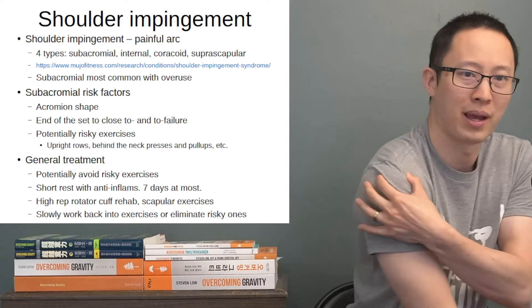There are four different types. The first and most common is subacromial impingement, and the acromion of the shoulder is right here. If you go to the end of your shoulder and feel the bony structure before you get into the soft tissue of the deltoid, that's the acromion. Usually the pain is right underneath this area of the shoulder.